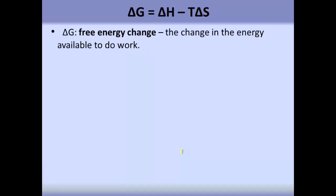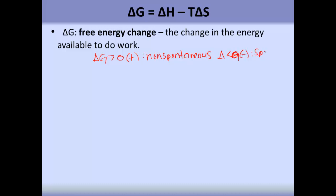Let's go through the terms of the free energy change equation. Delta G is the free energy change. If delta G is positive, then we're talking about a non-spontaneous reaction. And if delta G is negative, then we're talking about a spontaneous reaction.